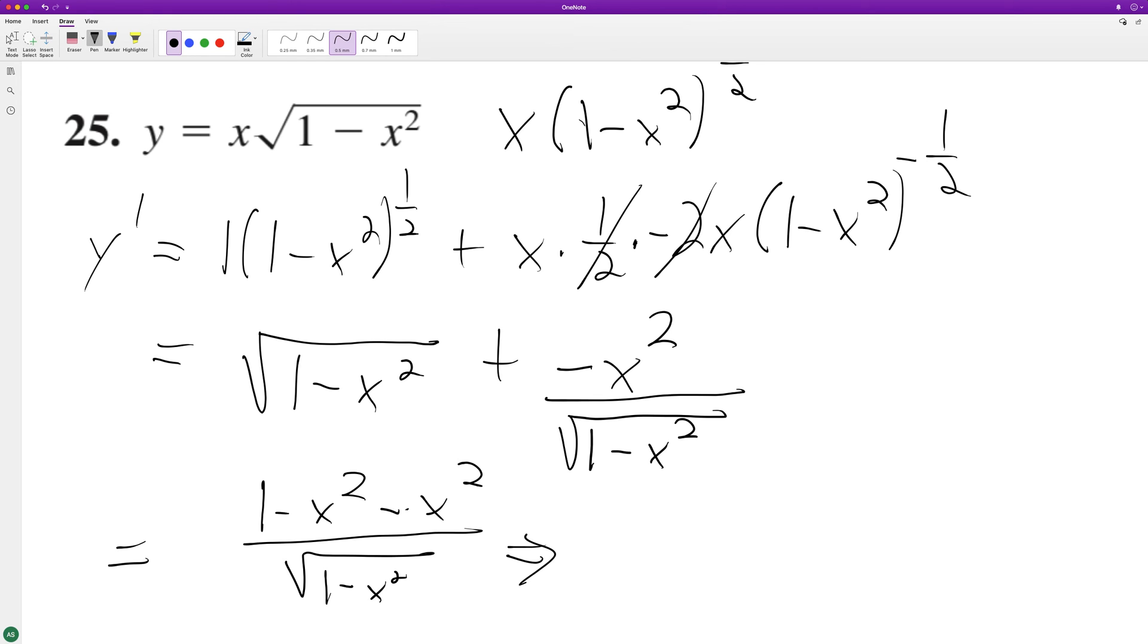So this finally becomes y prime is equal to 1 minus 2x squared over square root of 1 minus x squared. That's it.